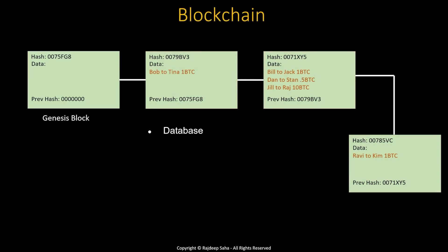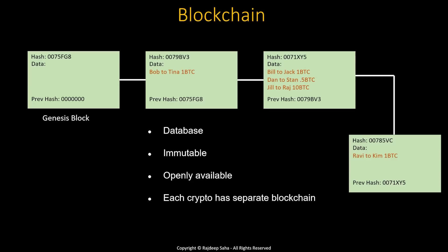In summary: blockchain is a database that stores information. It is immutable — once a block is written, you cannot change it. It is openly available, so anyone can read the blockchain and even copy it to their own computer. Each cryptocurrency has its own separate blockchain — Bitcoin, Ethereum, etc. If another crypto is reusing a blockchain, we call it a token, not a cryptocurrency. And because of the nature of mining and how data is stored, blockchain is slower than traditional databases.